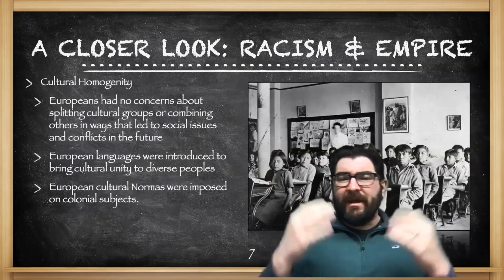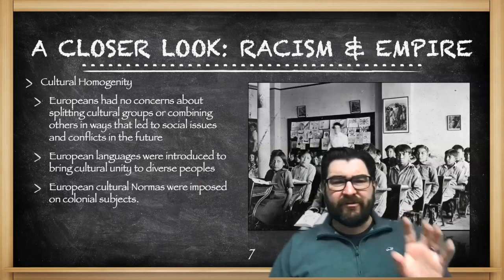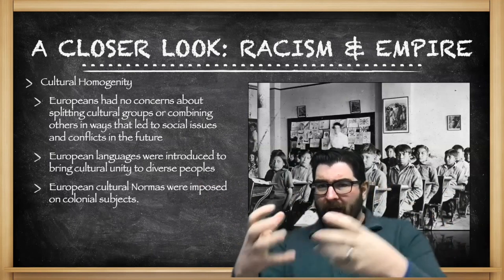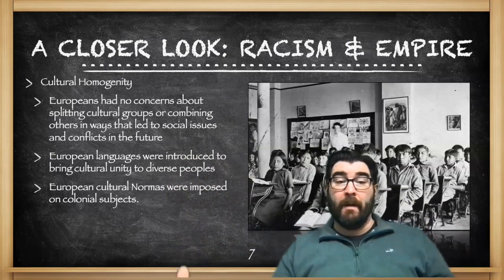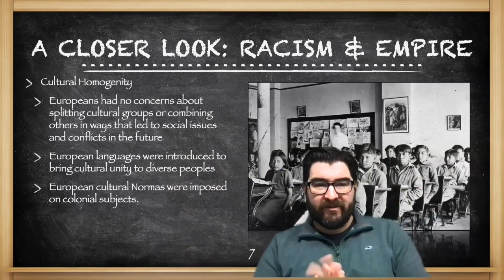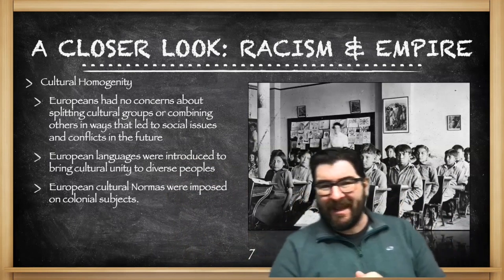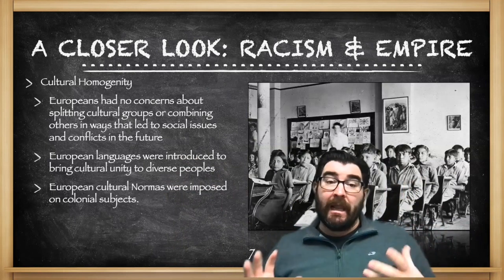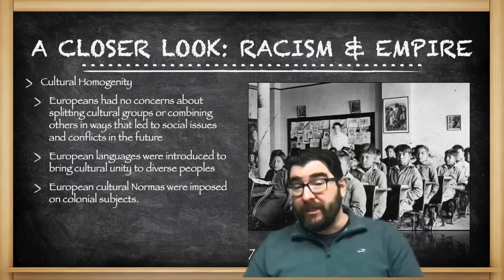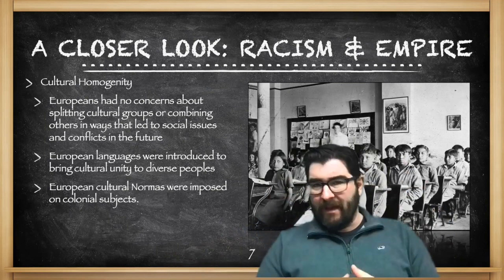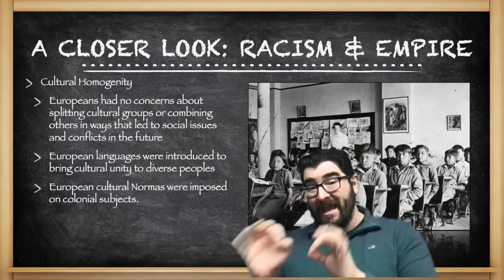Europeans were also looking to create a culturally homogenous society, even in their empires. They had very little concern for the cultural groups they were imperializing, whether splitting cultural groups into two territories or combining them into one colonial state. This would lead to social issues and conflicts in the future. European languages were pushed on colonial subjects to bring cultural unity to diverse peoples — that's why we still see French spoken in many African countries and English in many former English colonies.